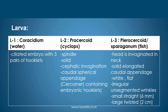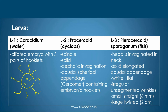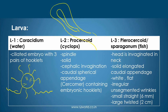The third morphological form is the larva, and the larval form can be seen in three stages. The first stage is the coracidium, which is basically a ciliated larva containing three pairs of hooklets, and it is seen freely in water. The second larval stage is also known as the procercoid, and it is found in cyclops. This stage is spindle-shaped, with a cephalic invagination and caudal spherical appendages which contain the hooklets — three pairs of hooklets.